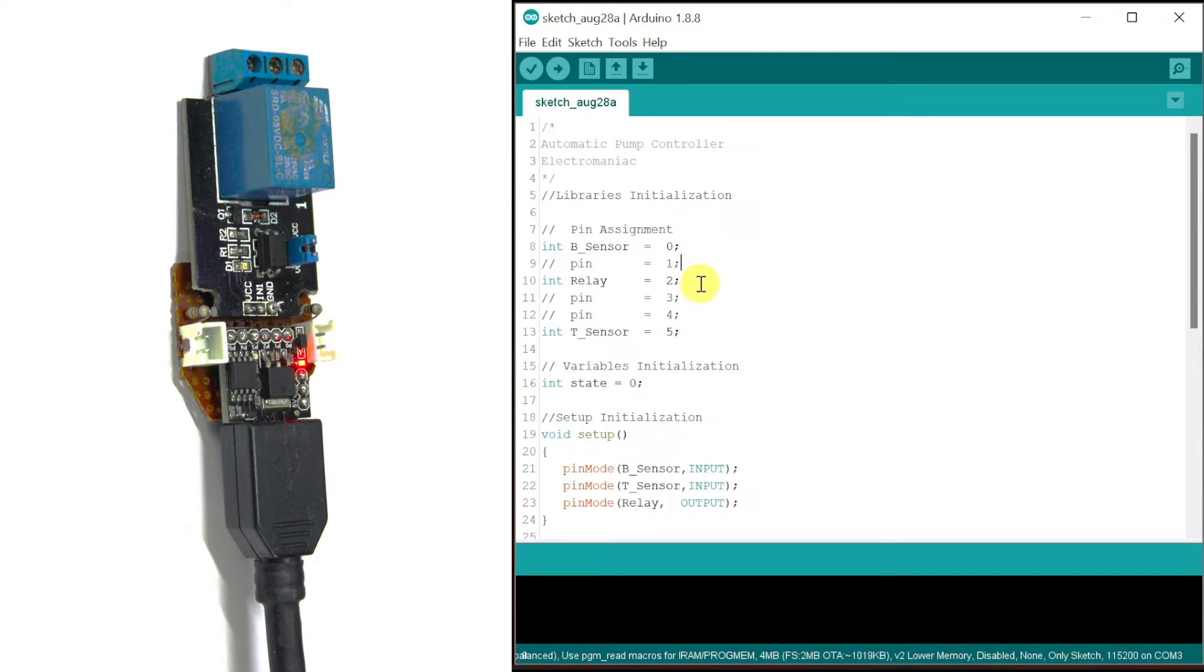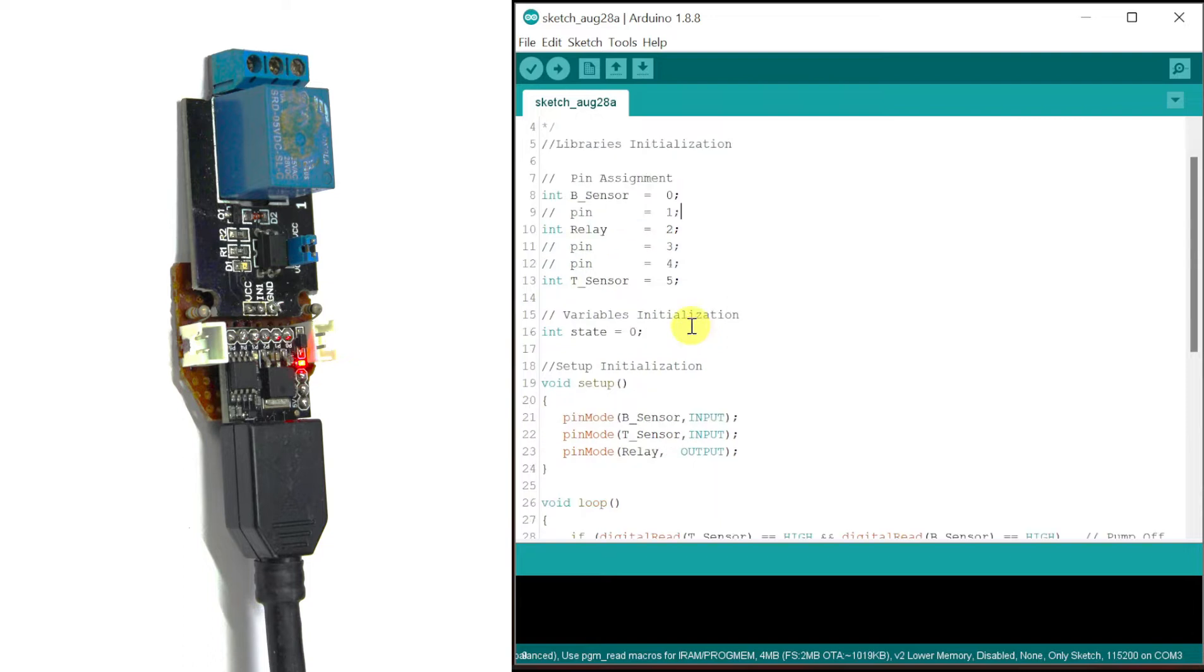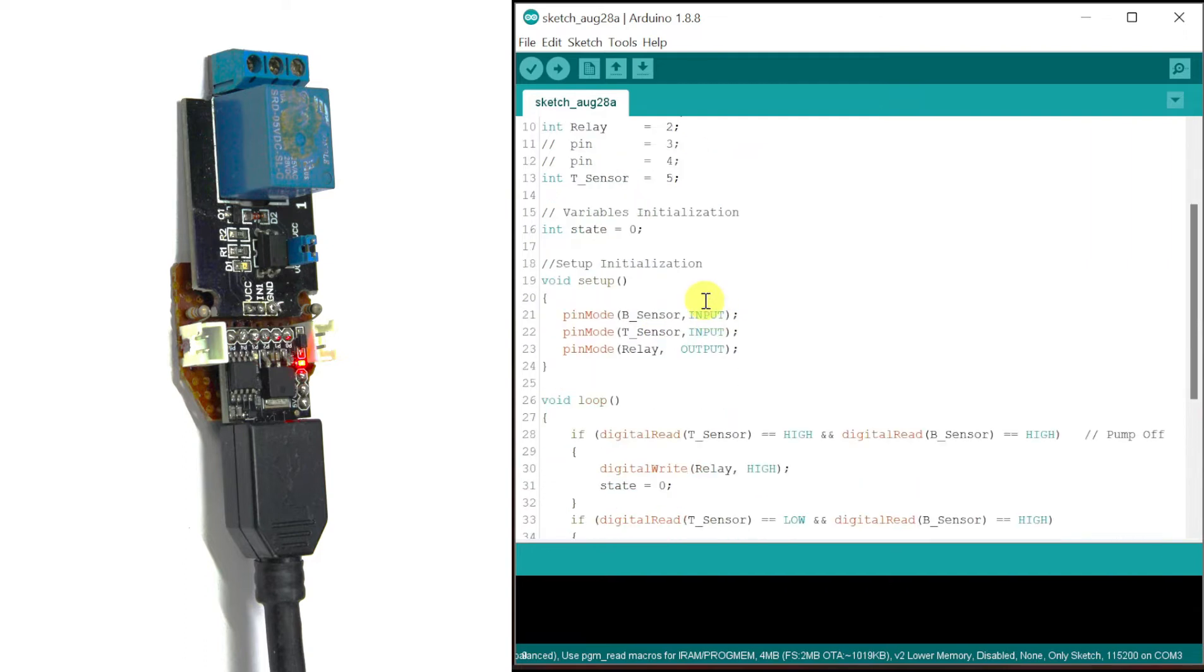Pin 0 is assigned to the bottom float switch or sensor. Pin 2 is assigned to the relay, and pin 5 to the top float switch. Only one state variable is required for storing the on-off state of the relay or the pump.